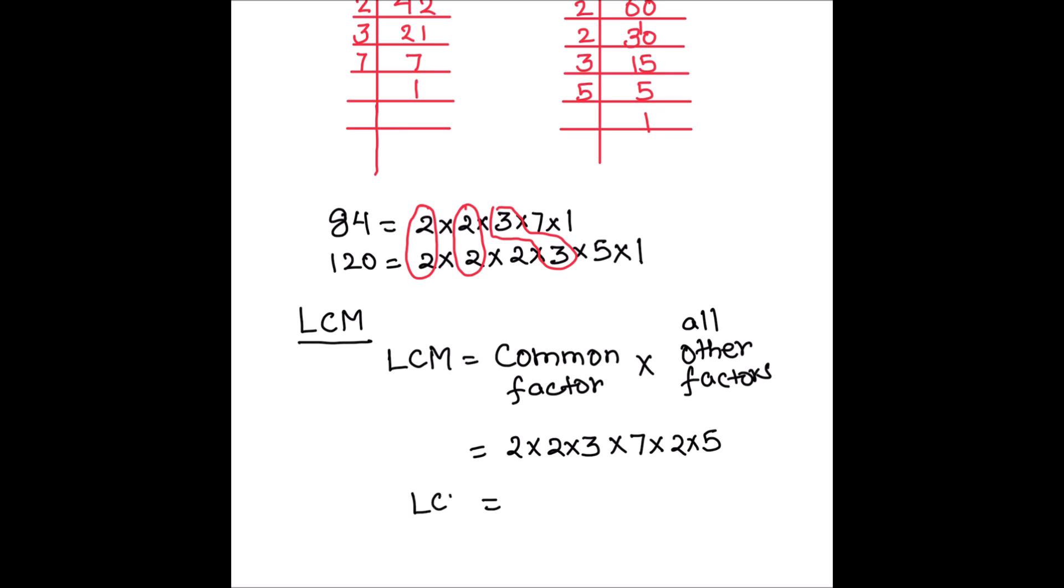So LCM equals 2 times 2 is 4, 4 times 3 is 12, 12 times 7 is 84, and 84 times 10 is 840. So the LCM of the two numbers is 840.